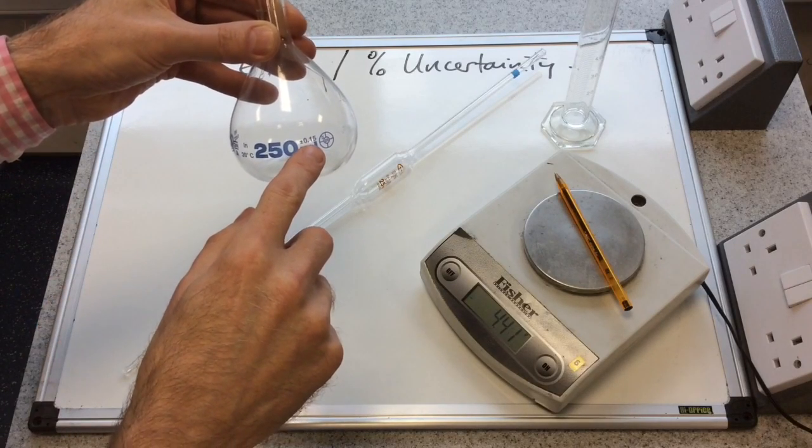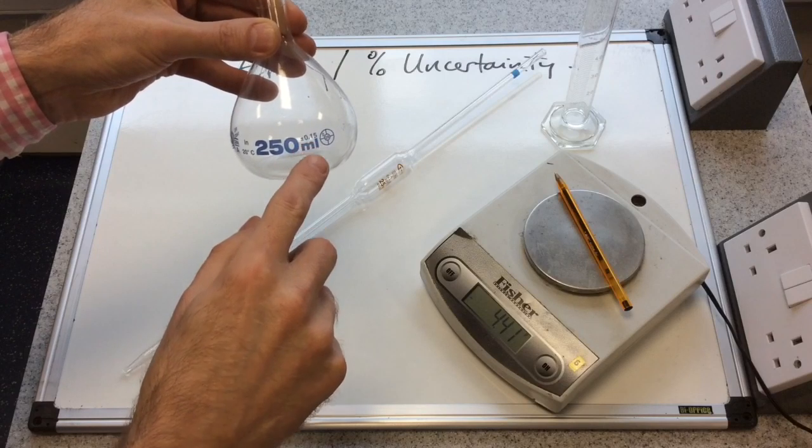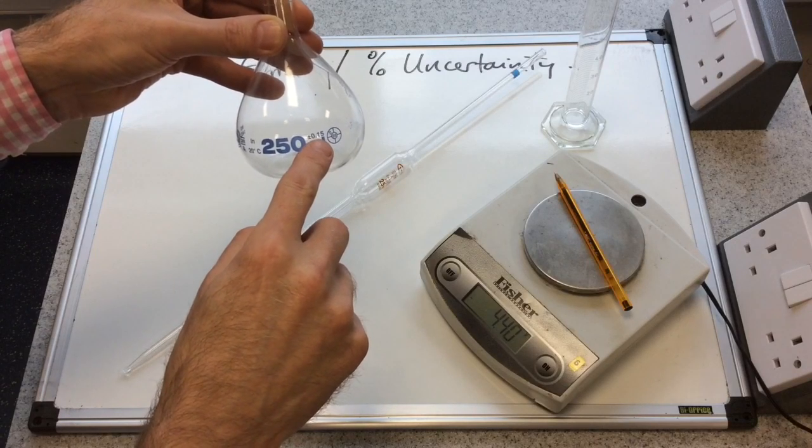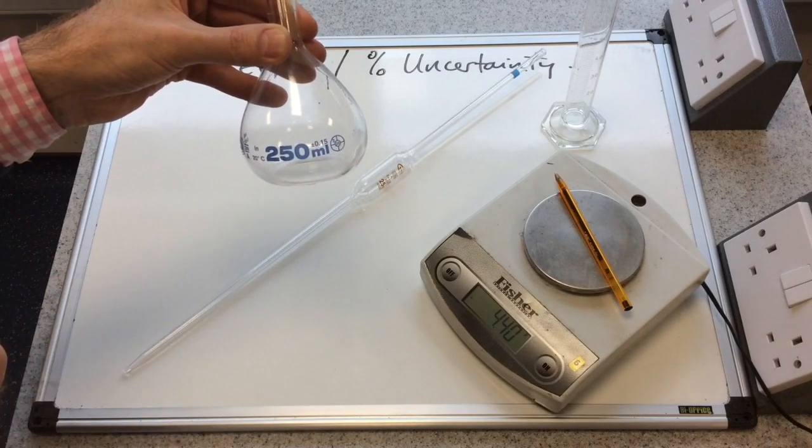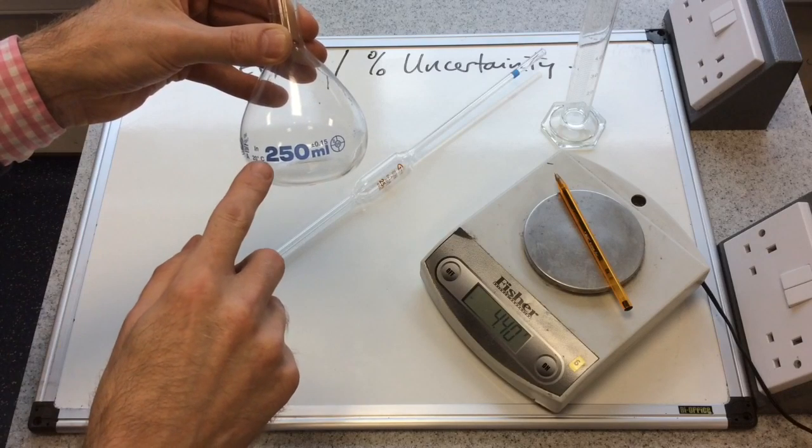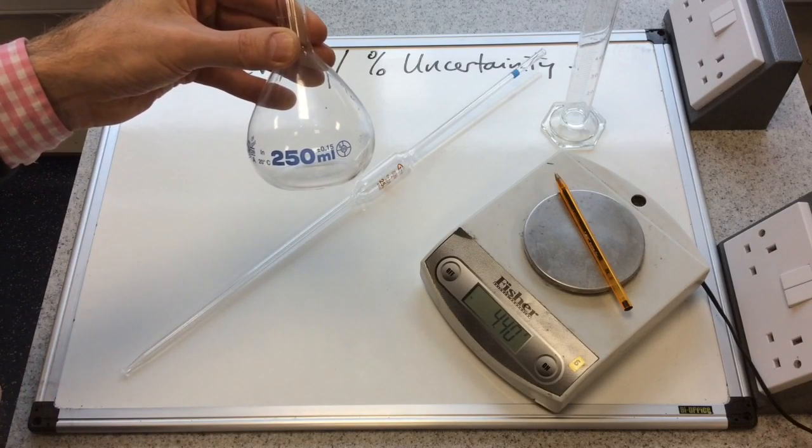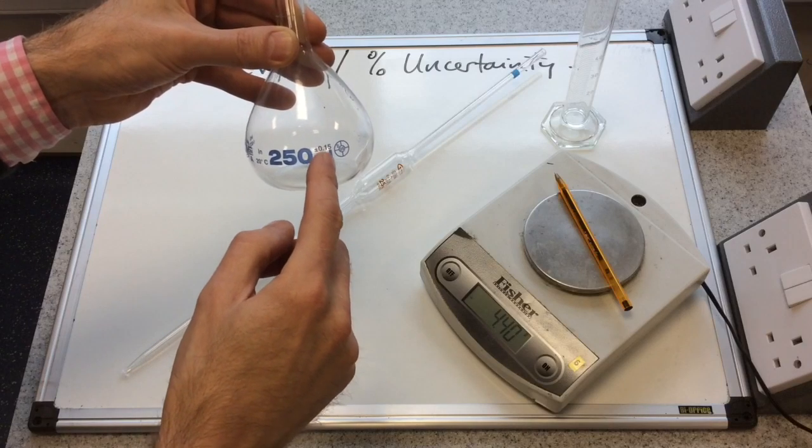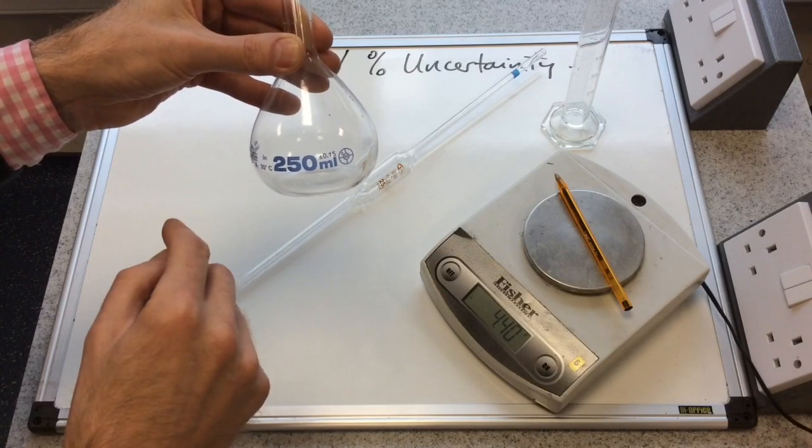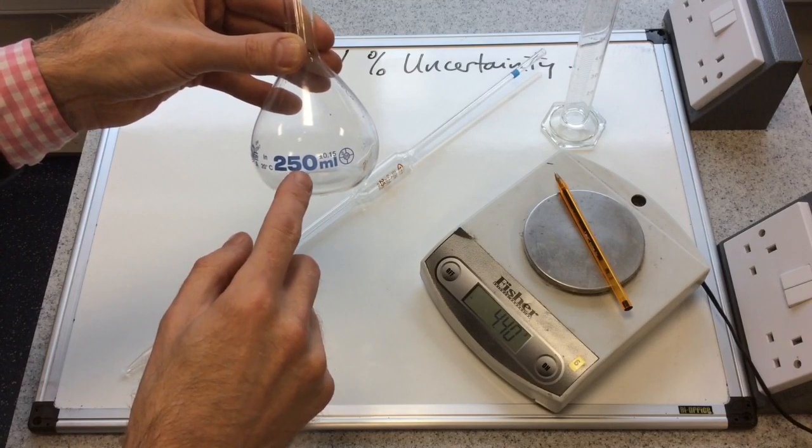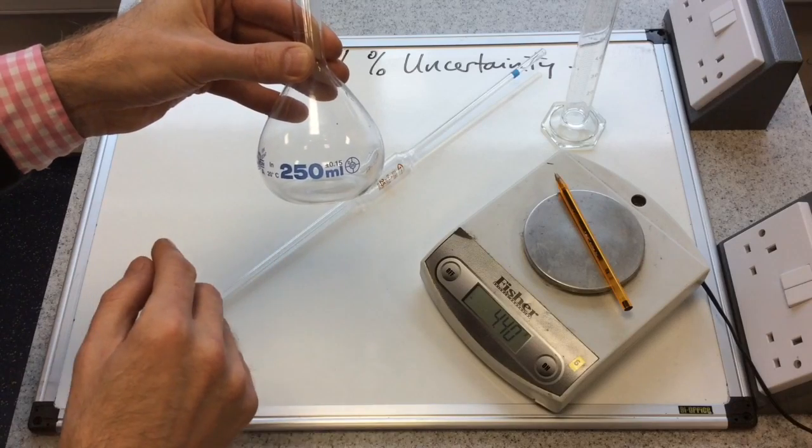So because of this plus or minus 0.15, there could be 0.15 over the 250, so in other words you'd have 250.15 milliliters of solution in there, or it could be 0.15 below, so you'd have 249.85 milliliters in there.